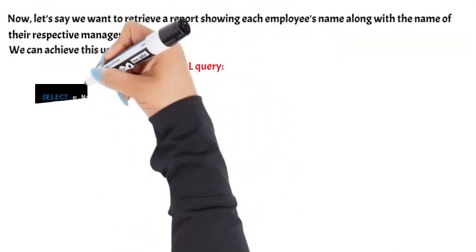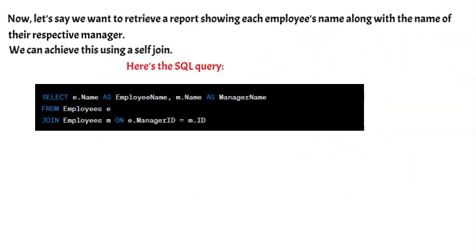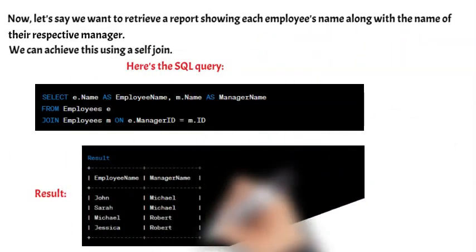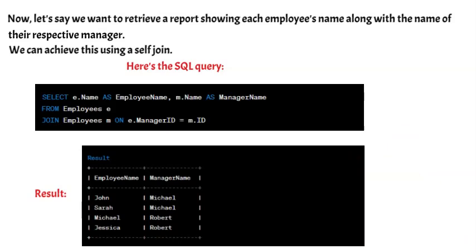Here's the SQL query. This query joins the employees table with itself based on the manager ID column. It matches each employee with their corresponding manager by comparing the manager ID of an employee with the ID of another employee. The self-join allows us to retrieve the names of employees along with the names of their respective managers from the same table. By relating the rows within the table, we can obtain meaningful information about the organizational hierarchy or relationships between employees.